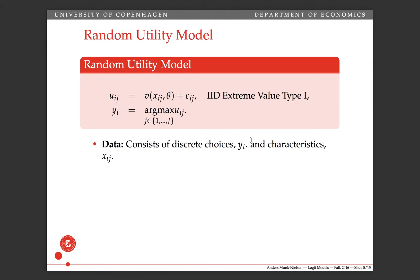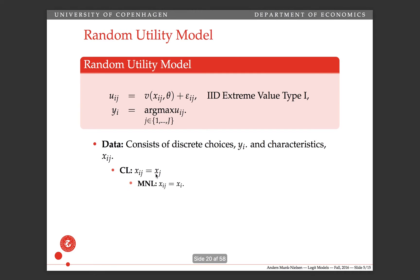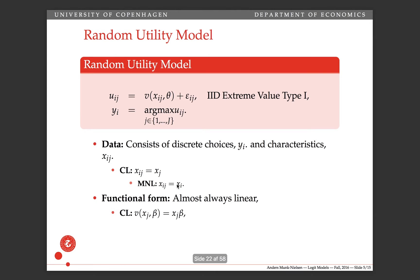The data for this type of model consists of discrete choices y and characteristics x_{ij}. In the random utility model, utility is generally a function of these x's and parameters. In the conditional logit, x's don't depend on i; in the multinomial logit, they don't depend on j. The functional forms assumed are almost always linear: x_j beta for conditional logit, and x_i beta_j for multinomial logit.